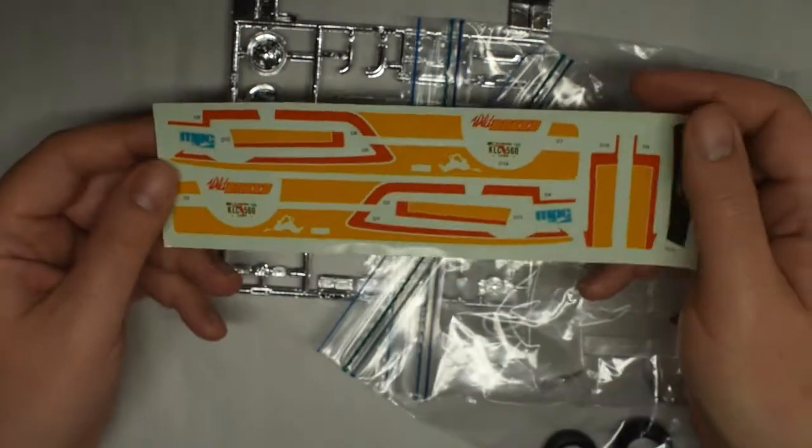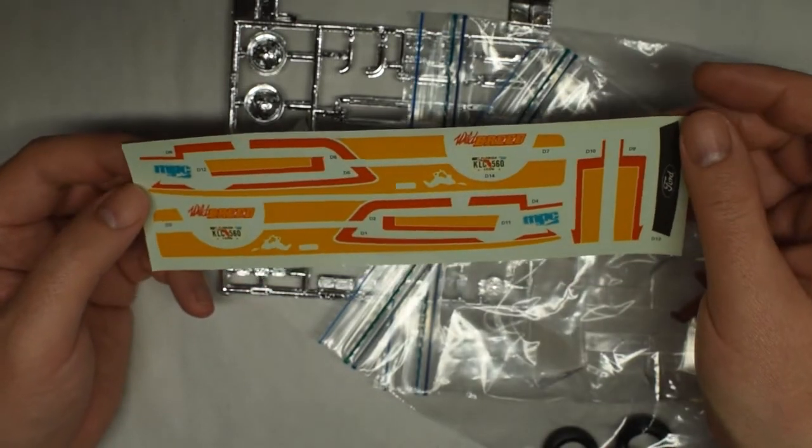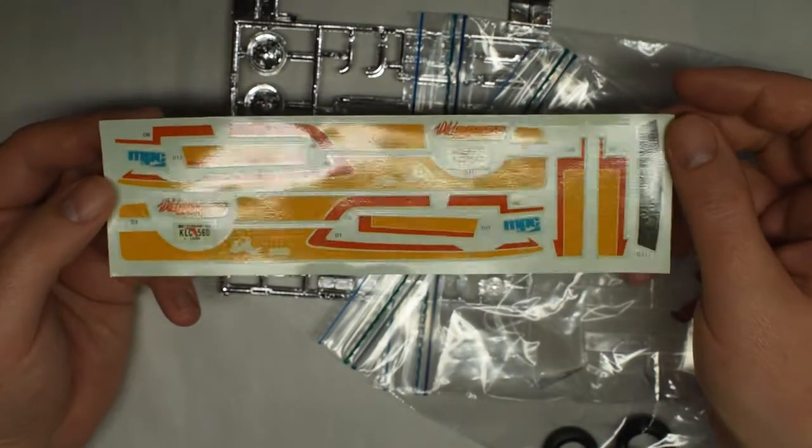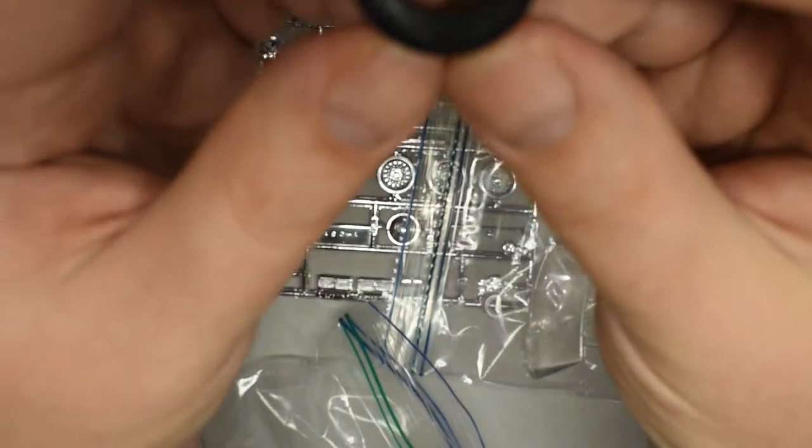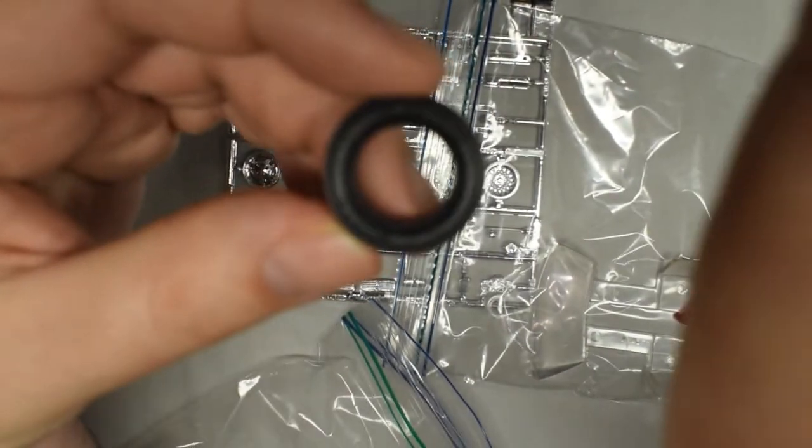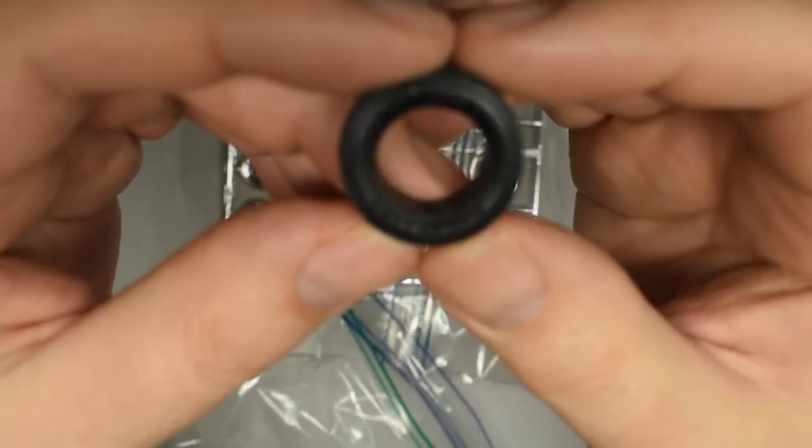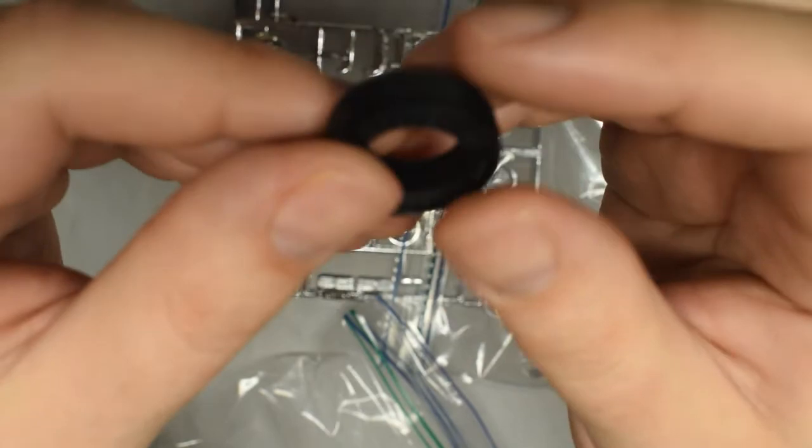Decal sheet. Let's see. Oh, okay. We got some pretty bold graphics here. MPC logos, license plates, tires, kit features. Goodyear Polyglas GT. These are solid tires.